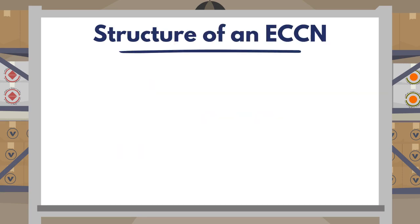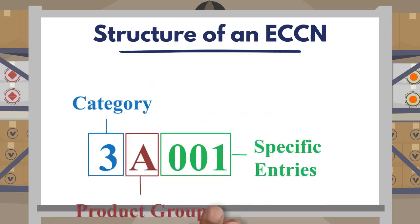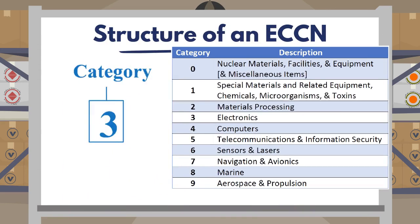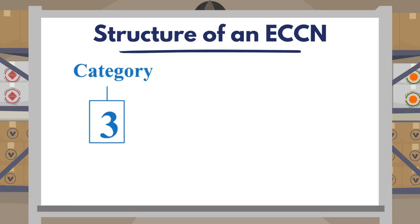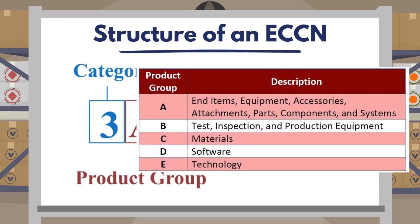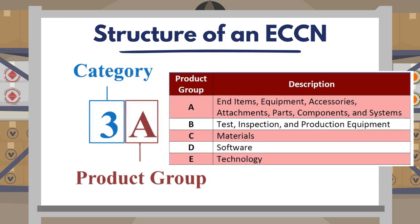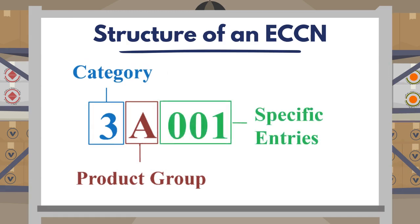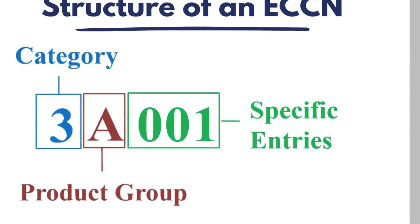An ECCN is a five-character alphanumeric code. The first character is a number from 0 through 9, representing one of the ten broad categories in the Commerce Control List. The second character is a letter A through E that indicates the type of item or product group. The third, fourth, and fifth characters serve as a sequential listing of different items within the category and product group.